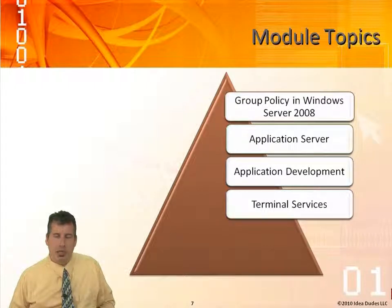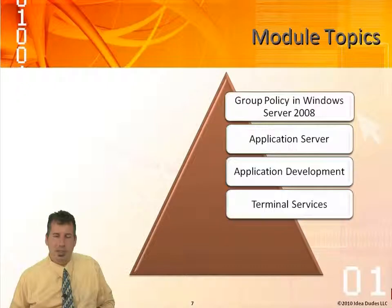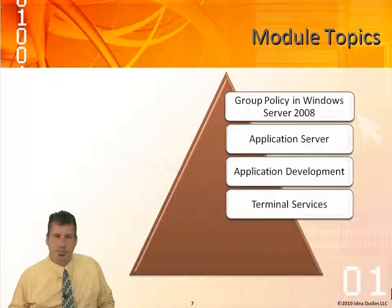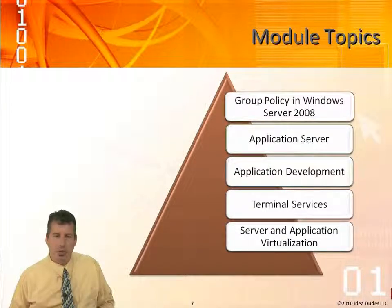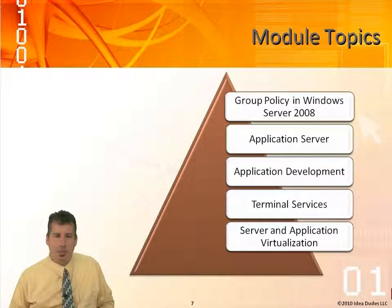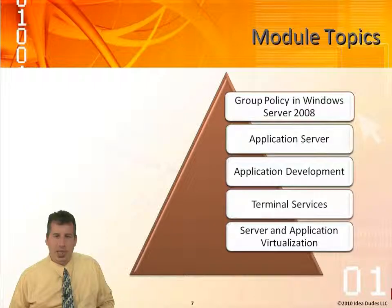Terminal servers — we'll be talking about different settings with terminal services like TS RemoteApp, TS CAP, TS RAP (used with TS Gateway), and TS Web Access, which allows us to virtualize our applications through TS RemoteApp. We'll talk about licensing: TS CALs for user and device CALs. For server application and virtualization, we'll be looking at Hyper-V, and in the demo I will demo Hyper-V and how we can set up a Hyper-V server and implement a new virtual machine. We'll also look at Microsoft Application Virtualization, a replacement for SoftGrid, as well as TS RemoteApp.